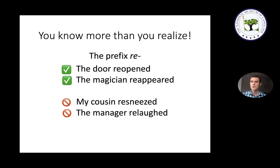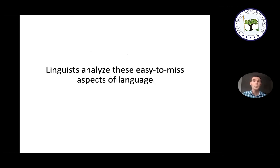Even though the intended meaning of these words is clear, they're still ungrammatical. In both cases you must be aware of these facts on some level in order to speak the language — you have to know which version of 'th' to use, and which verbs can and cannot take the prefix 're-'. But even though you know these things unconsciously, most people never consciously realize them. You could go your entire life as a fluent English speaker without ever noticing these facts.